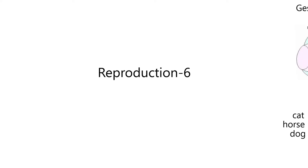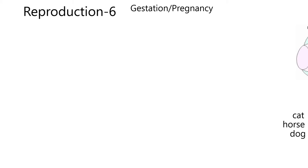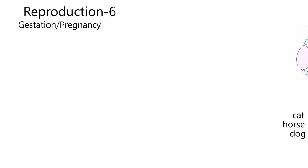Welcome to Reproduction 6. We're on our journey through the reproductive tracts of our focused animals: dogs, cats, and horses. This lesson is really going to concentrate on gestation, or pregnancy — they mean the same thing. We're just doing one layer thick of peeling back the onion in this introductory material. We could talk about gestation alone for weeks, probably.